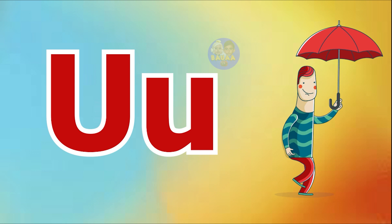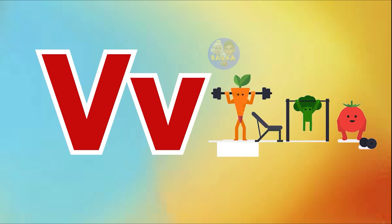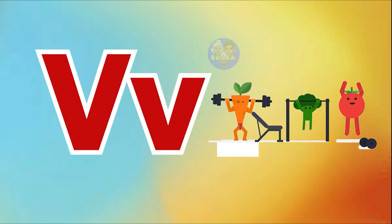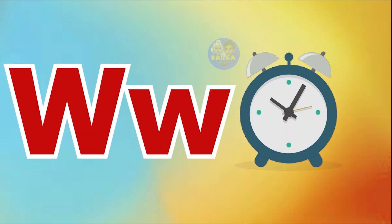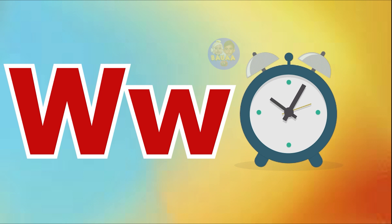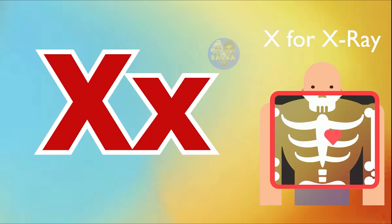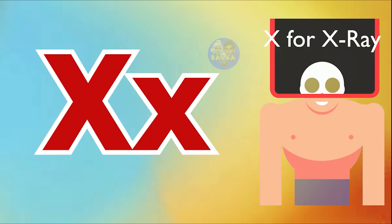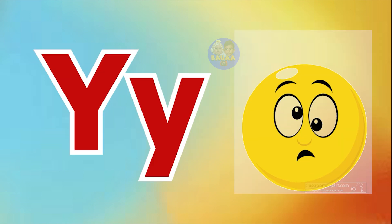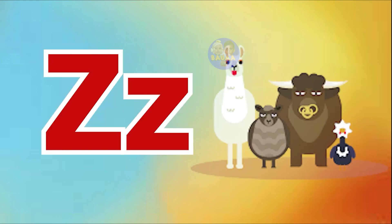T for tree, U for umbrella, V for vegetable, W for watch, X for x-ray, Y for yellow, Z for zoo.